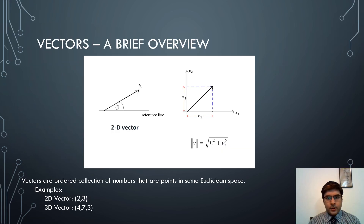You may have come across the mathematical concept of vectors in your higher studies in mathematics. Now we shall discuss briefly what they are and what they represent. A vector represents quantities that have both magnitude and direction in some Euclidean space. Vectors are ordered collection of numbers that are points in some Euclidean space.